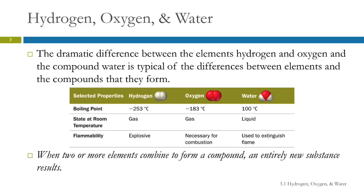So if we look at this little table here, looking at selected properties of hydrogen and oxygen, they both have very, very low boiling points. They are gases at room temperature. Hydrogen gas is explosive, and oxygen gas, while it can't actually burn, it's necessary for combustion. So both of these are fire hazards.